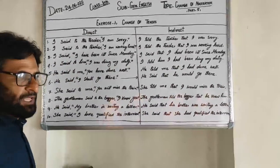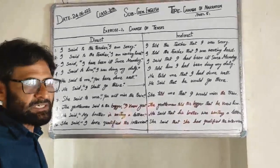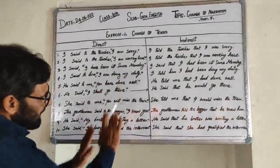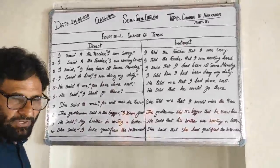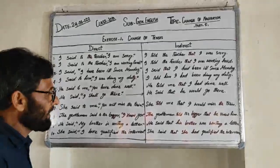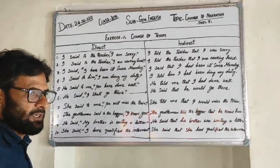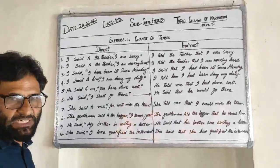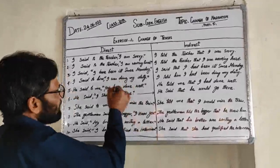ہم صرف پہلا rule جو ہم نے پڑھ لیا ہے، direct speech کو indirect میں change کرنے کے لیے follow کرنا ہے۔ ایک بار پھر دہراتا ہوں: پہلا rule یہ ہے کہ اگر direct speech میں reporting verb past میں ہو تو indirect میں change کرتے وقت reported speech بھی past میں change کرنی پڑتی ہے۔